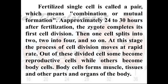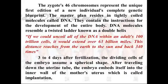The body cells are responsible for the development and formation of your muscles, tissues, bones, heart, and other organs of the human body. These cells multiply very fast and form what is a gift of nature — we call it a baby. The zygote carries 23 pairs of chromosomes, or 46 total chromosomes, which represents the unique first edition of a new individual's complete genetic blueprint.